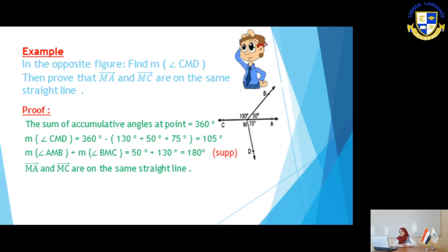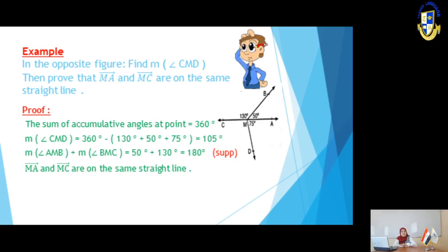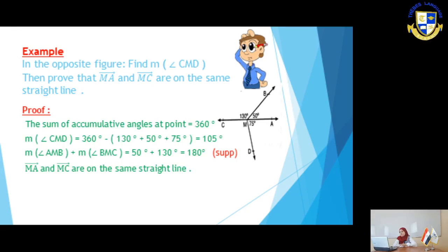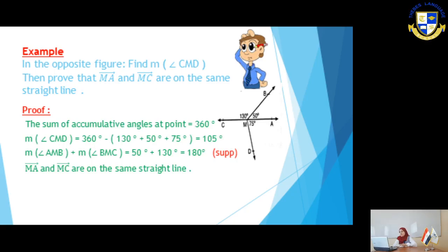In this figure, we have accumulative angles at point M. The sum of their measures equals 360 degrees. We have the measures of three angles, so we can get the fourth. Since the sum of accumulative angles at a point equals 360, measure of angle CMD equals 360 minus (130 plus 50 plus 75) equals 105 degrees.